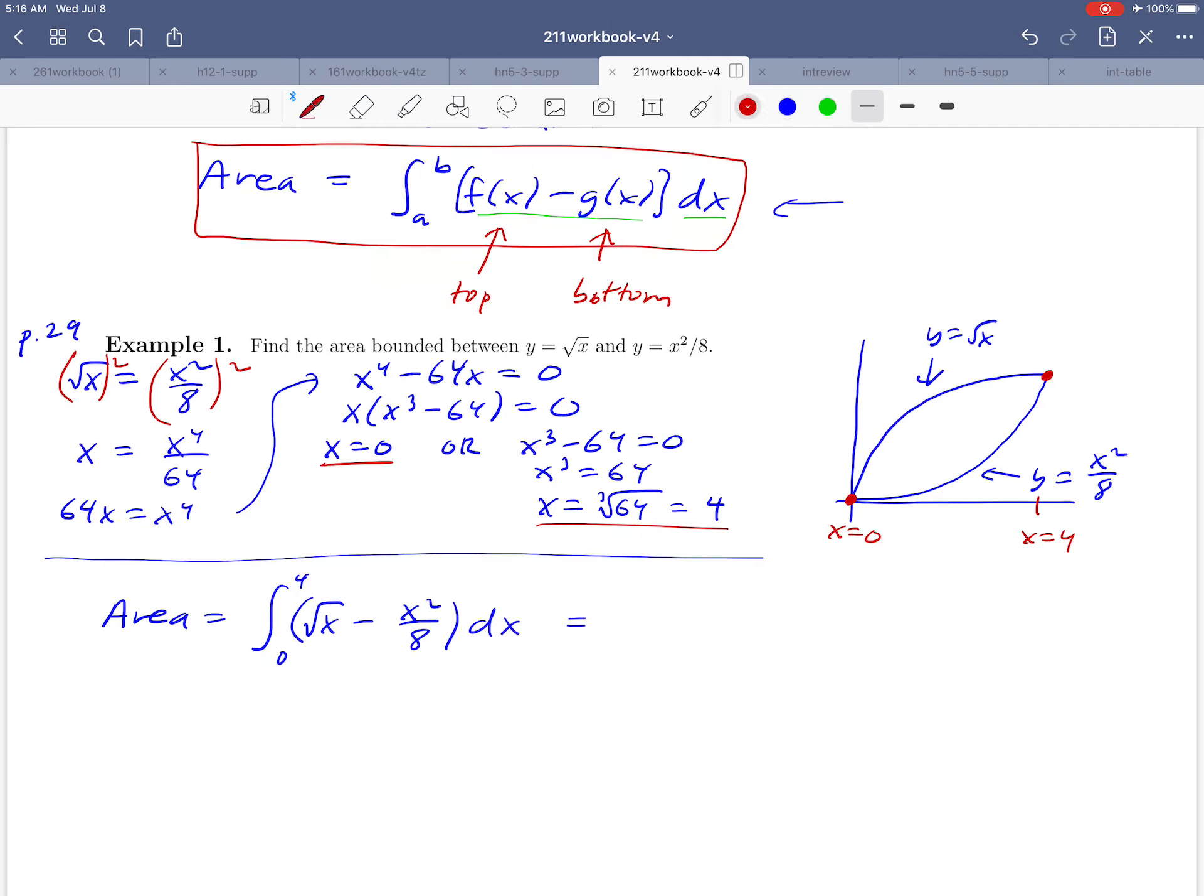So starting with the square root of x, I'm going to remind you that as a power, that's really just x to the 1 half. So to find an antiderivative there, we're just going to use the power rule. So we'll get x to the 3 halves over 3 halves, because we need to add one to that exponent. So that's the same as 2 thirds x to the 3 halves. If we take an antiderivative of x squared over 8, we're going to get x cubed over 24. Because I'm skipping an algebra step there. There's a 1 8, then we take the antiderivative of x squared, we get x cubed over 3, but then the 3 times the 8 gives us the 24.